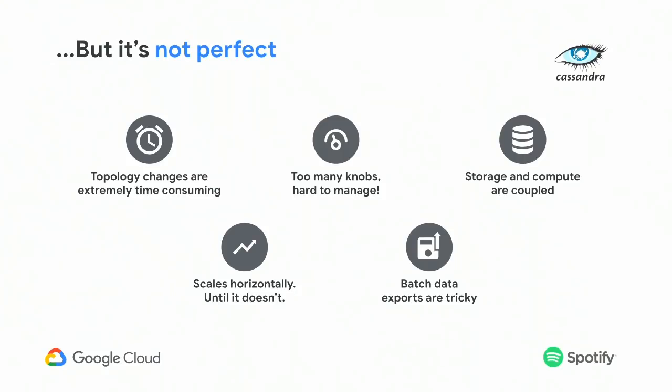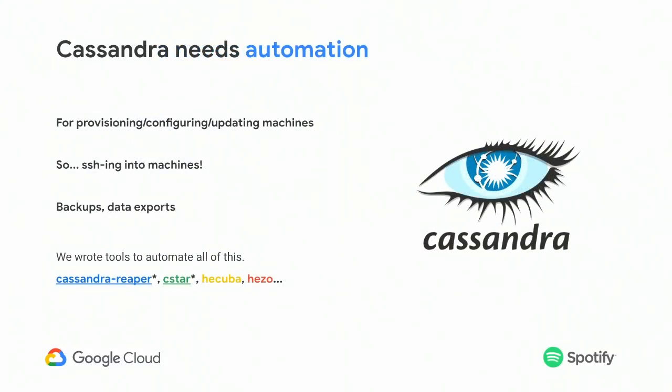The Cassandra version we use, which is not DataStax, doesn't come with data exports and backups, which was also tricky. In my team, we used to build tools to alleviate these pains and provide automation to other teams in the company — things like configuration management, updating, and topology changes. One of them is C-Star, which we open-sourced. It's basically a parallel SSH that is topology-aware.